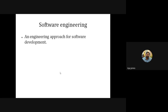If you want to construct a house, what they do is they will draw some plan, do some estimating, and after that they will start building. Similarly, in software engineering, if you want to develop a software, we have to go through a systematic approach. So it is a systematic approach to software development.